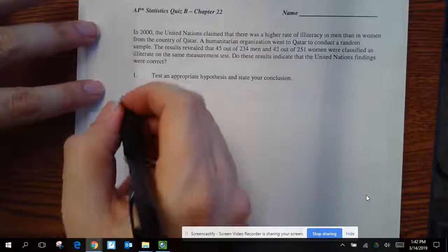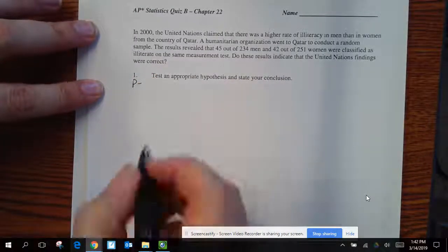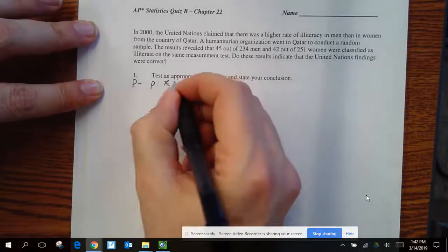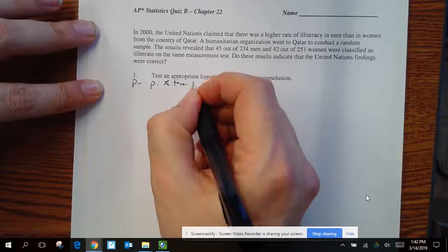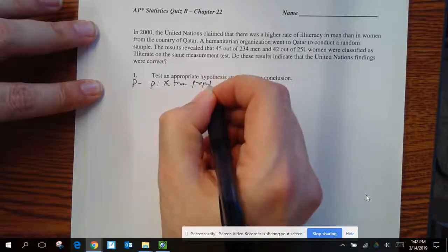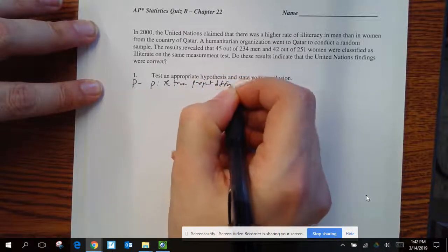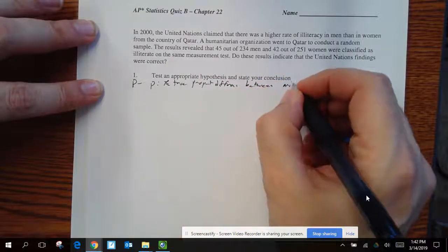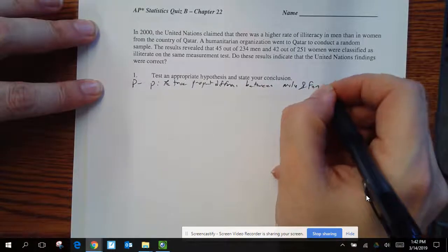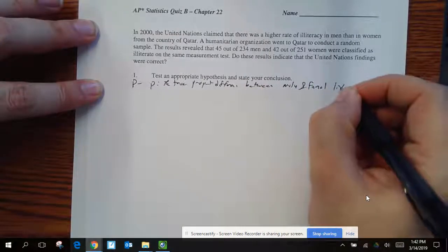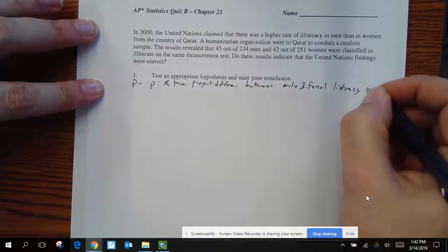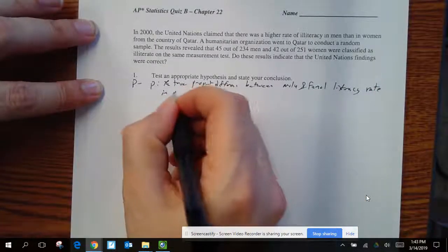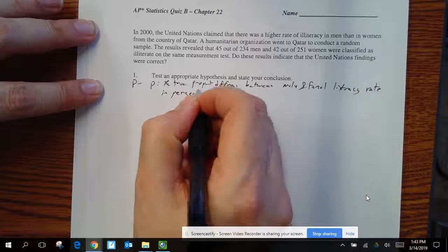So our first thing is, we're going to put down p. We'll define our parameter. So p will be the true proportion difference between male and female literacy rates in percentage points.